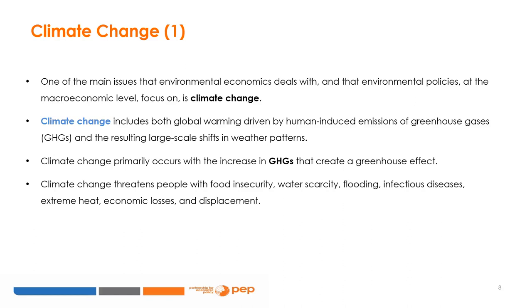The United Nations Framework Convention on Climate Change, UNFCCC, defines climate change as the change of climate attributed directly or indirectly to human activity that alters the composition of the global atmosphere, observed over comparable time periods in addition to natural climate variability. Climate change primarily results from the increase in greenhouse gas emissions, GHGs, that create a greenhouse effect. More than 90% of these GHGs are carbon dioxide, CO2, and methane, CH4.